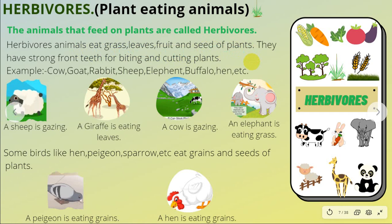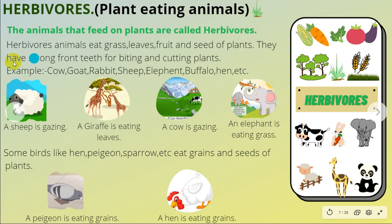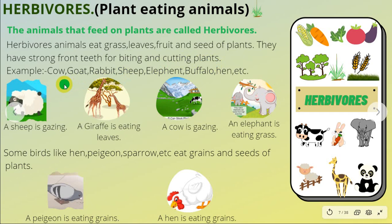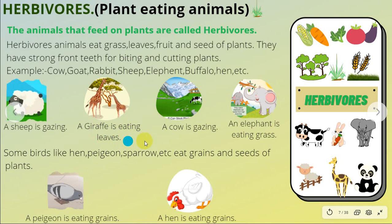Herbivorous animals have strong front teeth for biting and cutting plants. A giraffe is eating leaves, a cow is grazing, and an elephant is eating grass.